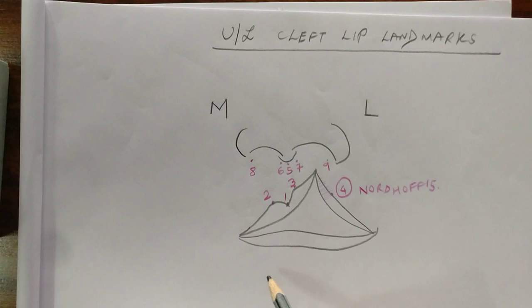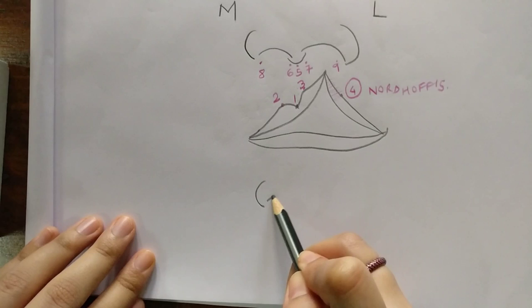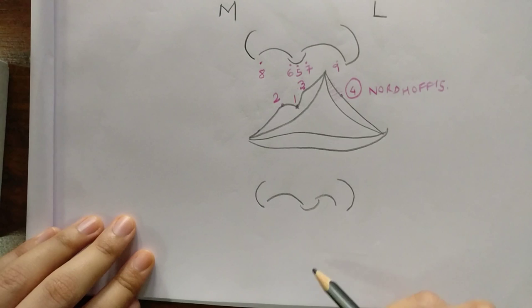Now similarly you should practice to make the lip for the opposite side, because in certain cases you will be asked to draw the right side. So for those cases practice is definitely required, otherwise you may not get the proper orientation.